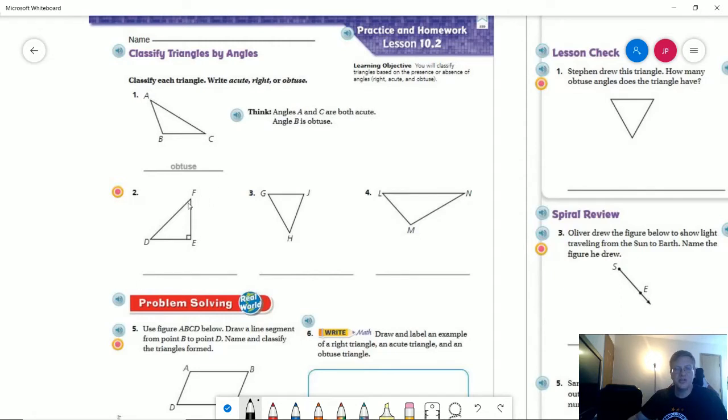So number one... or sorry, number two, we want to give what type of angle or triangle we have. So we have our little mark here that shows that it's a right angle, which means it would be a right triangle.